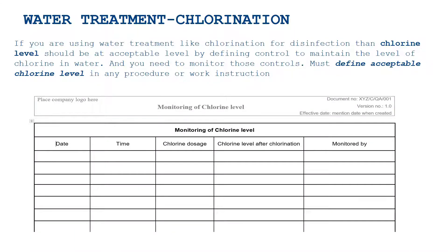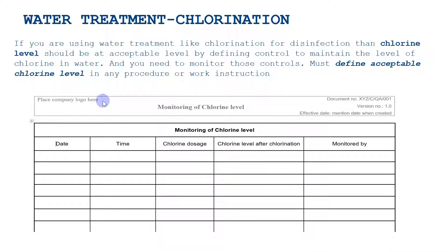For chlorination monitoring, I have described a template. It should include date, time, chlorine dosage given, chlorine level after chlorination, and monitored by. Please include the document header in your format to make it a controlled document according to your control procedure, which includes document number, version number, and effective date. You can place the company logo on the left or right as preferred, with the heading in between.